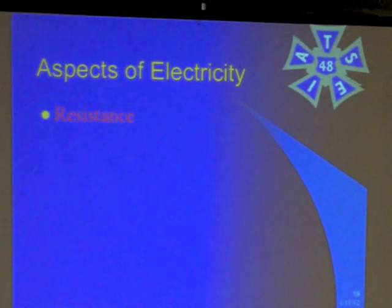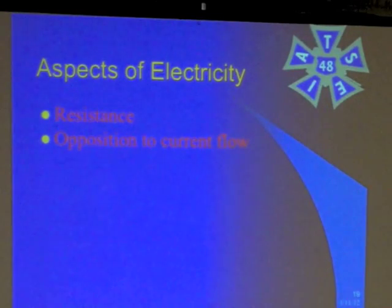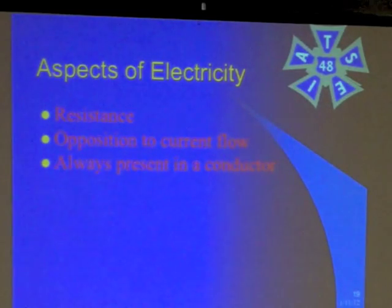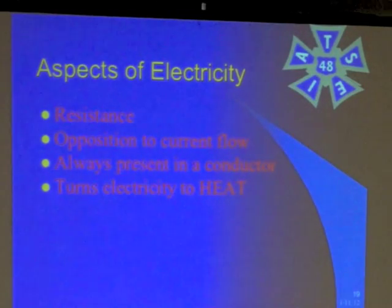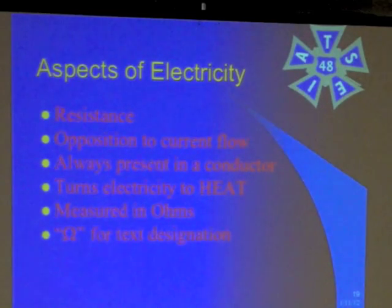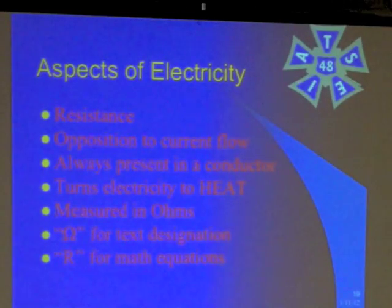The next aspect is resistance. Resistance is the opposition to current flow. When you plug something into the wall or a battery, it resists that electricity — it pushes back. It's always present in a conductor. Some conductors are better than others; silver has very low resistance, tap water has very high resistance. Resistance turns electricity into heat. It's measured in ohms, using the omega symbol in text, and R in math equations.